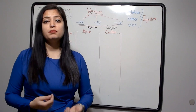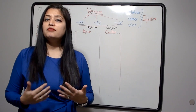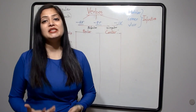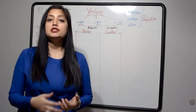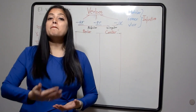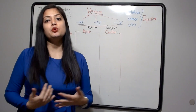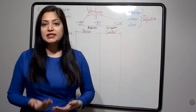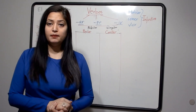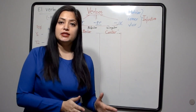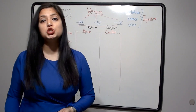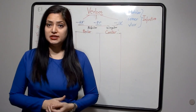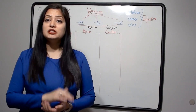Before we start the verbs, I would like to brush up on a few things. What is the infinitive form of the verb? The infinitive form is the basic form of the verb — like in English, 'to eat.' When you use it in a sentence, you don't say 'I to eat an apple.' You change that verb according to the subject, which is called conjugation. Conjugation means changing the basic verb form as per the subject, and the same concept exists in Spanish.